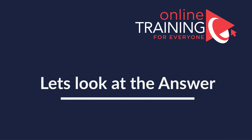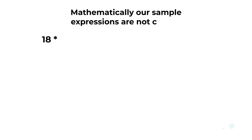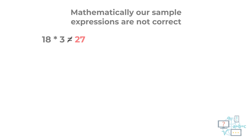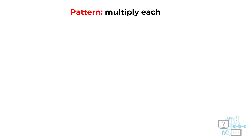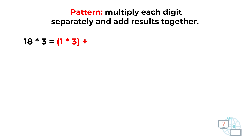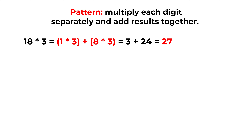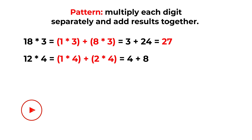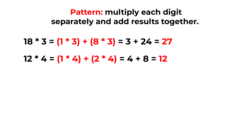Even though the expressions are not mathematically correct in the conventional sense, if you multiply each digit of the two-digit number separately and add the results, you get the answer. For example: 18 × 3 = (1×3) + (8×3) = 3 + 24 = 27. Similarly, 12 × 4 = (1×4) + (2×4) = 4 + 8 = 12.